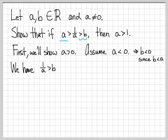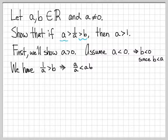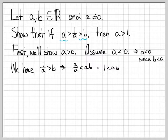Going back to one of our starting assumptions: 1 over a is greater than b. Since we're assuming a is a negative number, if we multiply both sides of this inequality by a, on the left side we get a over a, and on the right side we get a times b. Because a is assumed to be negative, we have to flip the inequality from greater than to less than. So we get a over a is less than a times b, which simplifies to 1 is less than ab.